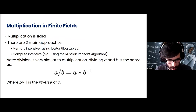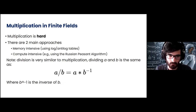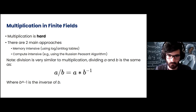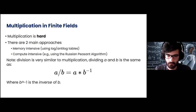Multiplication is much harder. There are two main approaches: one that is very memory intensive, using log and antilog tables, and another that is very computationally intensive — in our case, the Russian peasant algorithm. Note that division is very similar to multiplication, because dividing a by b is just the same as multiplying a by the inverse of b.